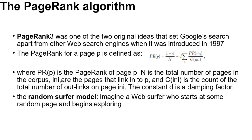The constant d is a damping factor, understood through the random surfer model. Imagine a web surfer who starts at some random page and begins exploring. With probability d, the surfer clicks on one of the links on the page, and with probability (1 - d), they get bored and restart on a random page anywhere on the web. The page rank of page P is then the probability that the random surfer will be at page P at any point in time. PageRank can be computed by an iterative procedure, starting with all pages having PR(P) = 1 and iterating until the ranks converge.